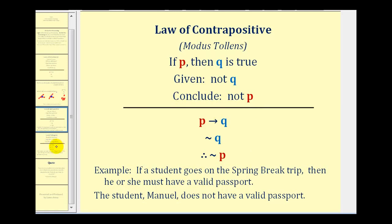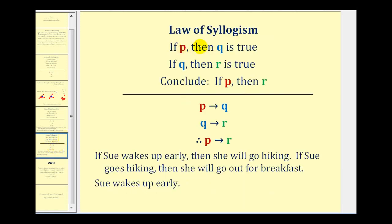Let's take a look at one more method of deductive reasoning. It's called the law of syllogism. It states that if P then Q is true and if Q then R is true, we can conclude that if P then R. We can express the same using this notation: if P then Q, if Q then R, therefore if P then R.